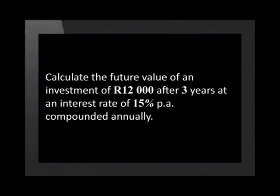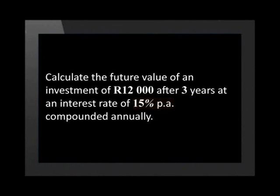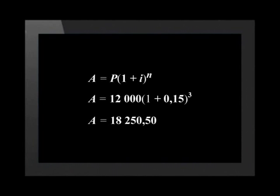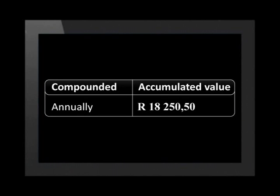Let's use this to calculate the future value of an investment of 12,000 rand after three years at an interest rate of 15% per annum compounded annually. Substituting into the formula we get A equal to 12,000 times (1 + 0.15) to the power of 3, which equals 18,250 rand and 50 cents.